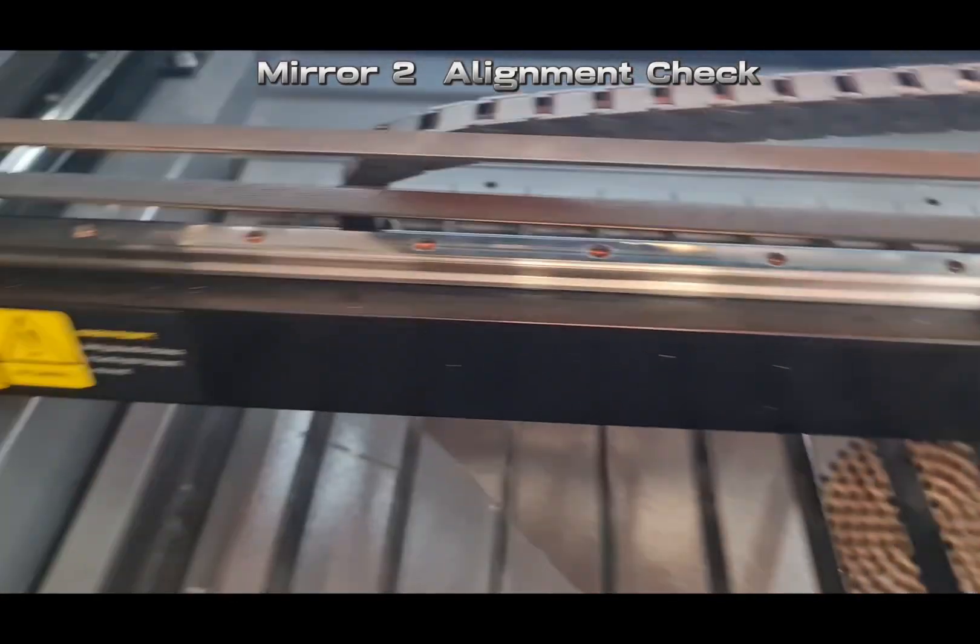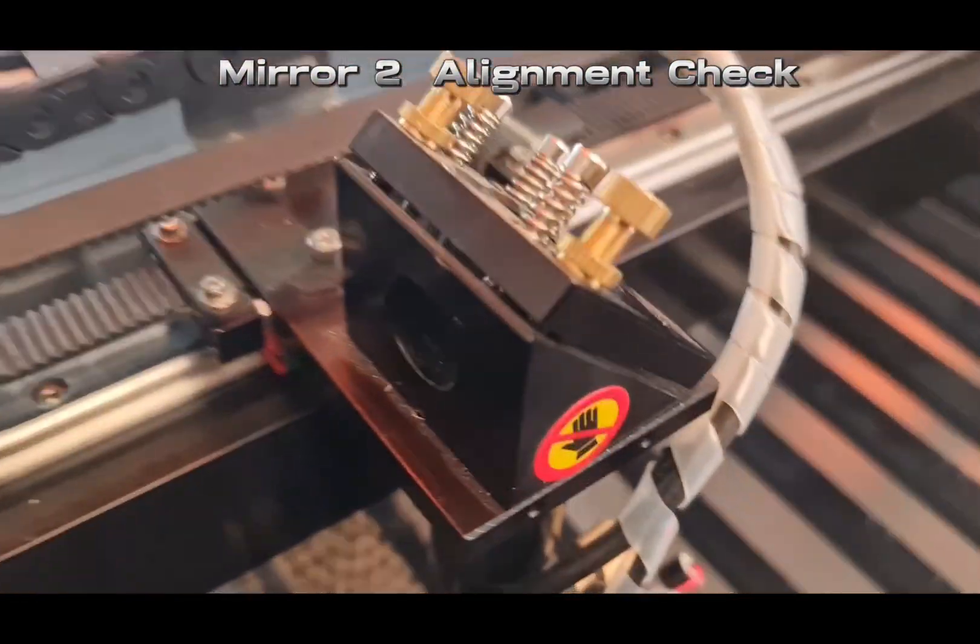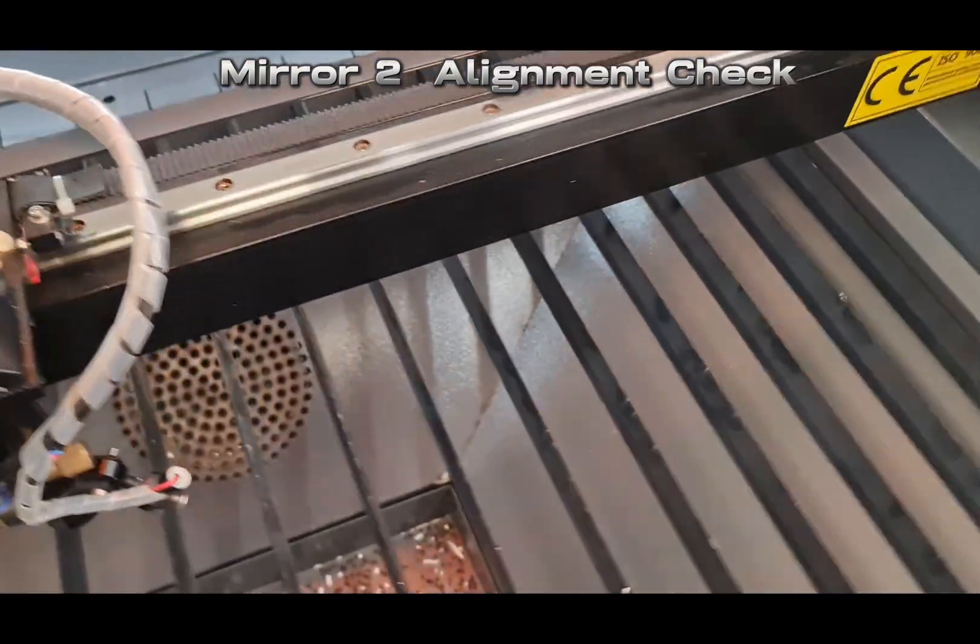Here we're going to check the alignment on a laser. First up, we're going to start with mirror 2 and check it's hitting the right spot on the laser head prior to mirror 3.